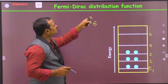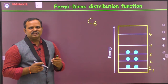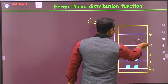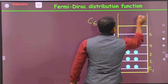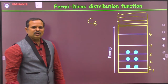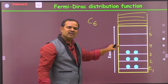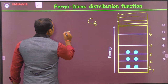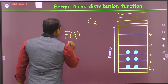What does the Fermi-Dirac distribution function tell us? The Fermi-Dirac distribution function tells us the probability — the probability of finding a particle in any energy level. I have so many energy levels; I have shown only 5 here, but there can be n number of energy levels. This probability is given by the Fermi-Dirac distribution function F(E).